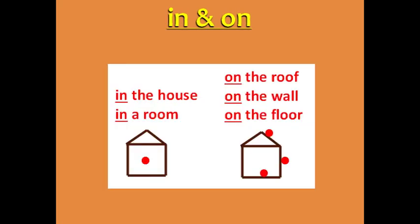Something can be in the house or in a room, because house and room are enclosed spaces. But we say on the roof, on the wall, or on the floor — because roof, wall, and floor are all surfaces.